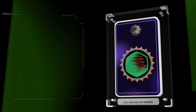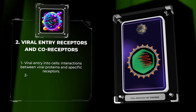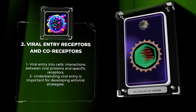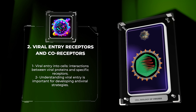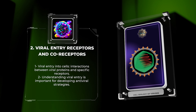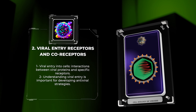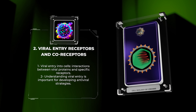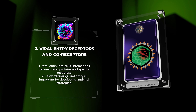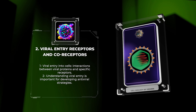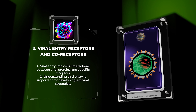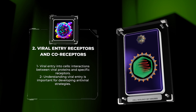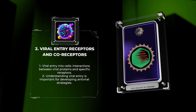Viral entry into cells involves interactions between viral proteins and specific receptors on target cells. These receptors act as gateways, allowing the virus to enter and cause infection. Some viruses rely on a single receptor, while others need a co-receptor. Understanding these interactions is important for developing antiviral strategies.